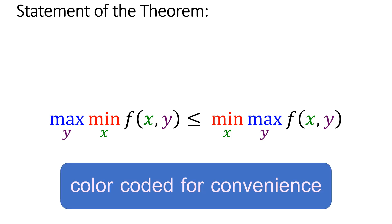Everything that follows has been color coded for convenience. Max and min operations are in blue and red, and the variables x and y are in green and purple.